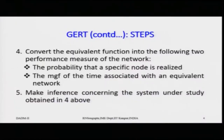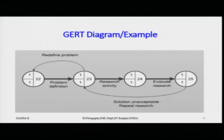Finally, you make inferences concerning the system from the results above — using the moment generating function for time and the probability that a specific network path would be traversed. One gives a distribution of probability, the other gives time found via the moment generating function. Consider now a simple example of a GERT network where you are doing some process.